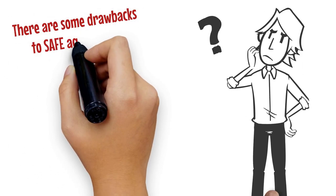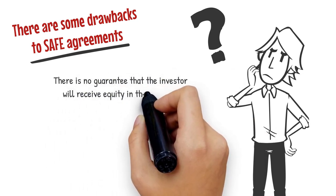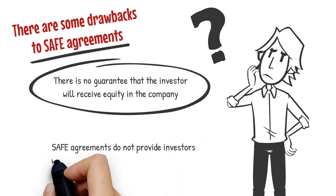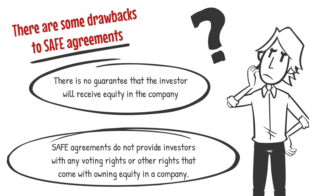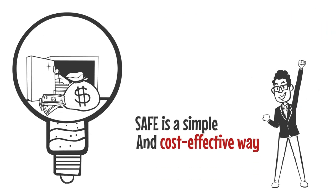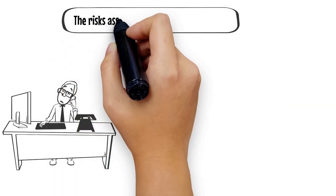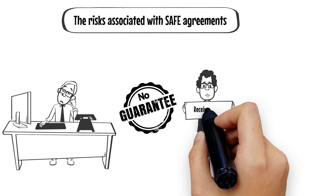However, there are some drawbacks to SAFE agreements. There is no guarantee that the investor will receive equity in the company, as the agreement does not guarantee any return on investment. Additionally, SAFE agreements do not provide investors with any voting rights or other rights that come with owning equity in a company. In summary, SAFE is a simple and cost-effective way for startups to raise capital, but it is important to understand the risks, as there is no guarantee that the investor will receive equity in the company.